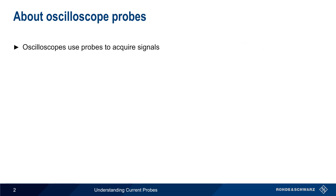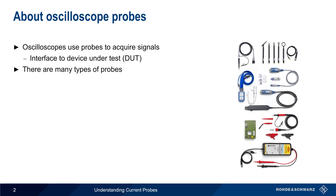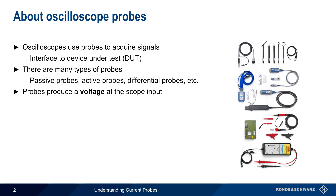Let's start by talking about probes. Oscilloscopes use probes to acquire a signal — probes are the way that the scope interfaces with the device under test. There are many different types of probes, such as passive probes, active probes, differential probes, etc. Despite their differences, these probes all have one thing in common: they produce a voltage at the oscilloscope input. This is because oscilloscopes measure voltage as a function of time.